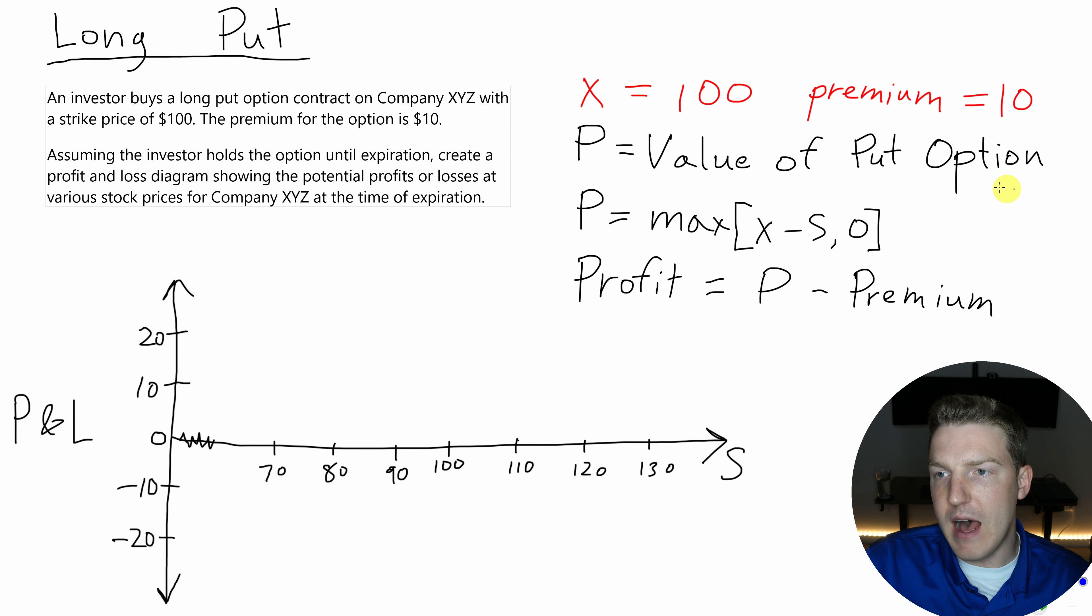P is equal to the value of the put option, and P is equal to the maximum of either 0 or the strike price X minus S. So this is very similar to the value of a call option, but in the call option it was S minus X.